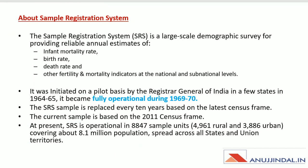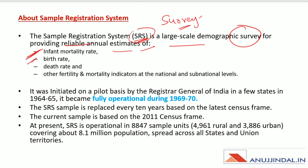SRS, or Sample Registration System — also referred to as Sample Registration Survey — is a large-scale demographic survey for providing reliable annual estimates of infant mortality rate, birth rate, death rate, and other fertility and mortality indicators at the national and sub-national levels.